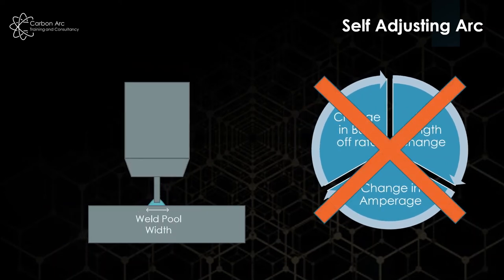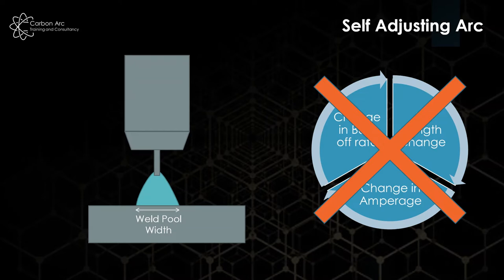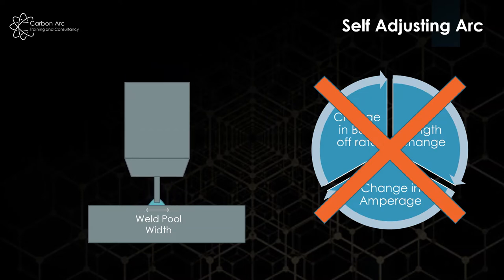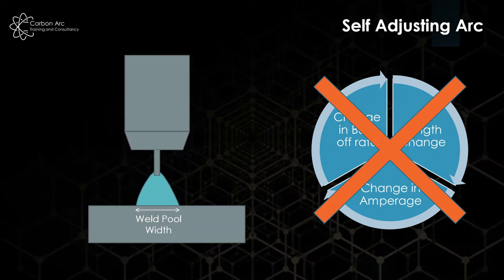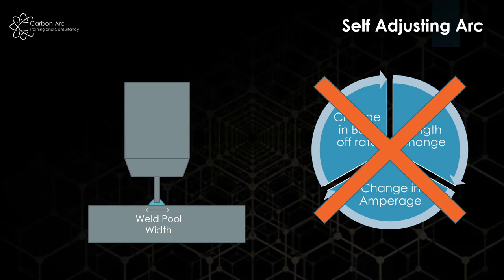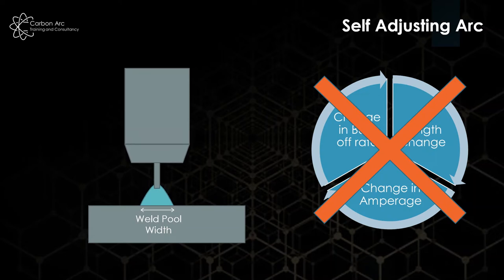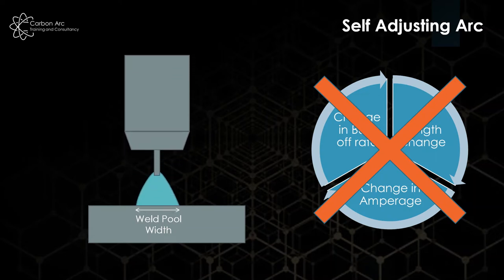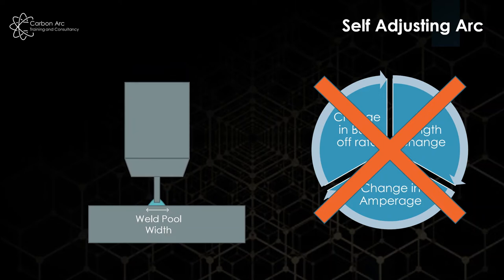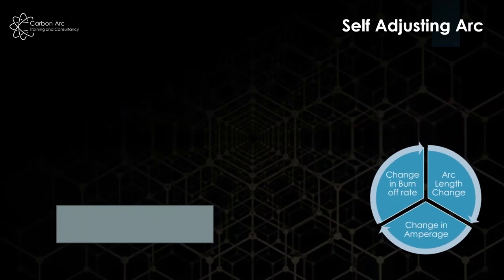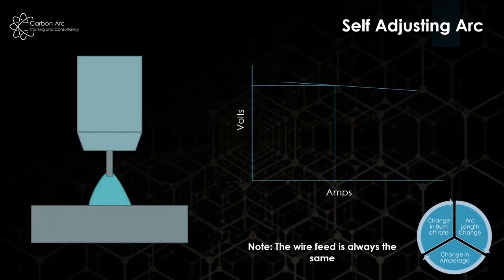If we didn't have this process and we applied a drooping characteristic as with TIG and MMA, as we move the torch in and out, we wouldn't control the size of the arc and the width and the depth of the weld pool would forever be fluctuating and it would be uncontrollable for what we want in MIG-MAG. So, what we do to correct that is we have what's called a flat characteristic curve.